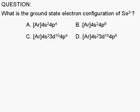What is the ground state electron configuration of the selenide ion, Se with a negative 2 charge? A: argon core, 4s2, 4p4. B: argon core, 4s2, 4p6. C: argon core, 4s2, 4p4. D: argon core, 4s2, 4p6.